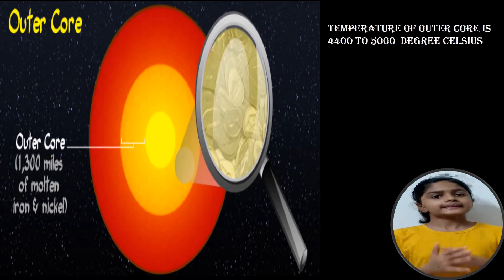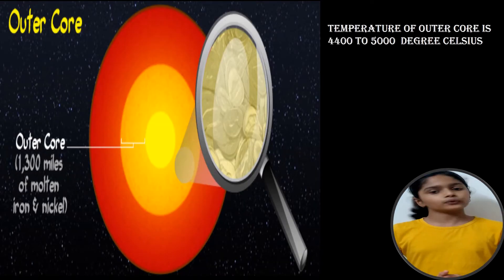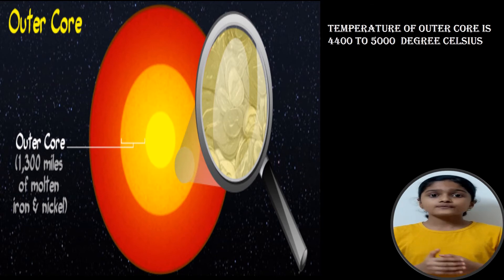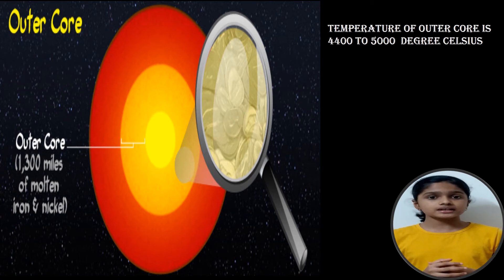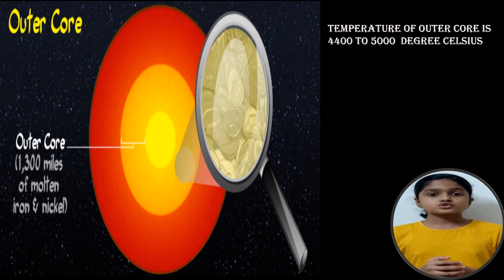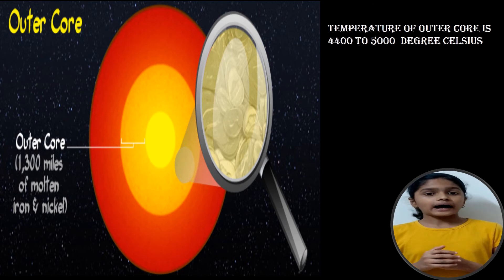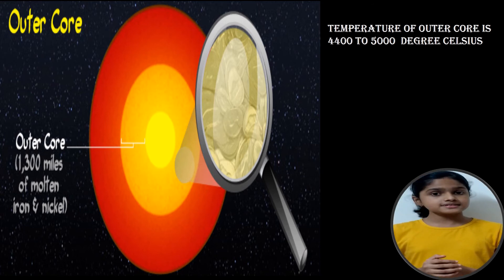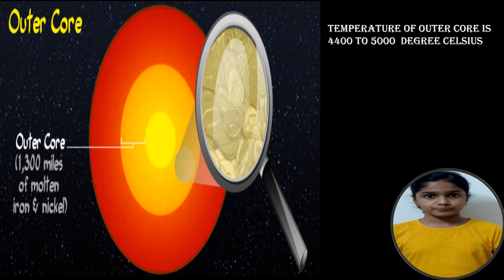The next layer of the earth is the outer core. The outer core is made up of iron and nickel metal. It is very hot, about 4,400 to 5,000 degrees Celsius. It is so hot that the iron and nickel metals are in liquid form.